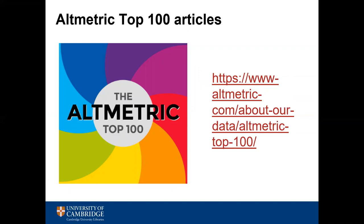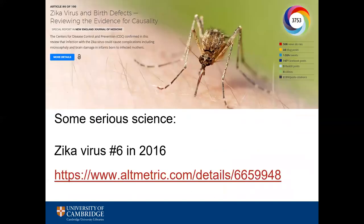Altmetrics usually does analysis of the top 100 altmetrics attention scores for the year and publishes them. A Zika virus paper was number 6 in 2016 when the Zika virus was obviously big news. Several publishers made their papers on Zika open access so that practitioners in countries that could not afford journal subscriptions could read them, which may have influenced how much attention Zika received.